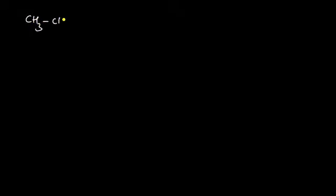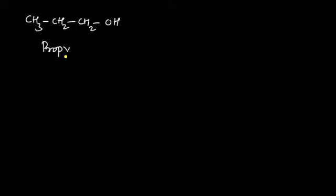For example, CH₃CH₂CH₂CH₂OH — you can notice there are four carbons in the molecule, so this can be represented as a butyl alcohol. This is a linear, non-branched chain, therefore we use the prefix n, giving us n-butyl alcohol.